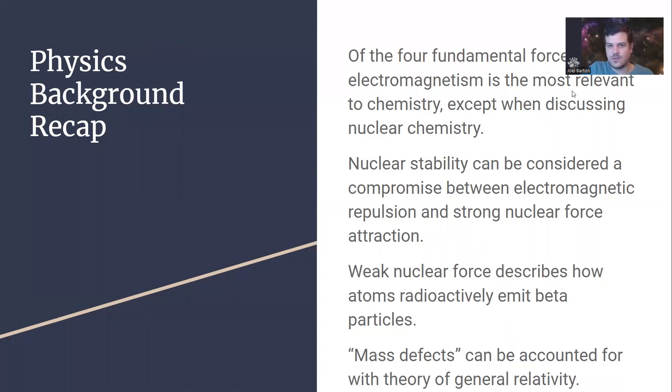Let me just remind you that there are these four fundamental forces. Electromagnetism is the one that overwhelmingly we're going to be referring to for most of the chemistry course. However, for nuclear chemistry, you would want to know about a couple of the other ones. Nuclear stability is a kind of compromise between that electromagnetic repulsion between protons and the strong nuclear force attraction that exists between protons and other protons, as well as between the neutrons present in that nucleus. Finally, here, the weak nuclear force is describing how some atoms are going to radioactively decay according to the quarks changing within their nucleons. It can emit beta particles. It can also govern electron capture. And then finally, this mass defects thing is accounted for with theory of general relativity.